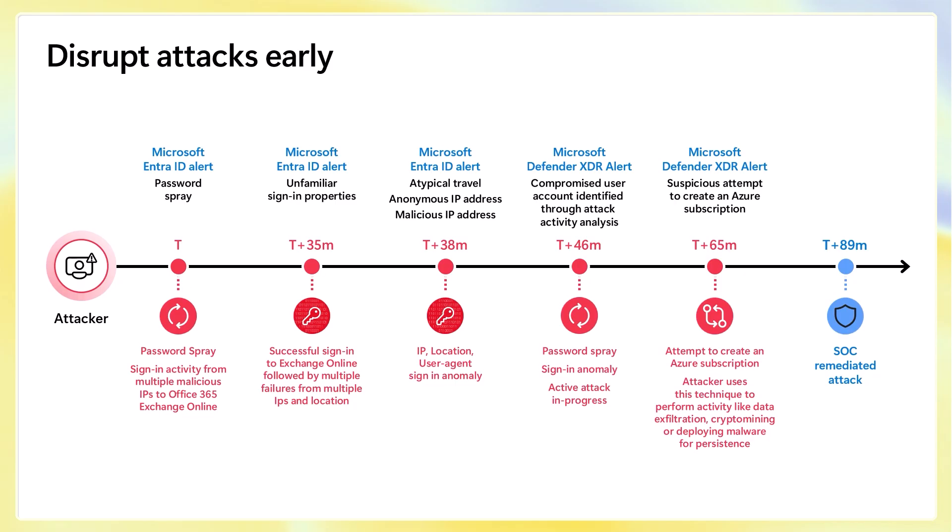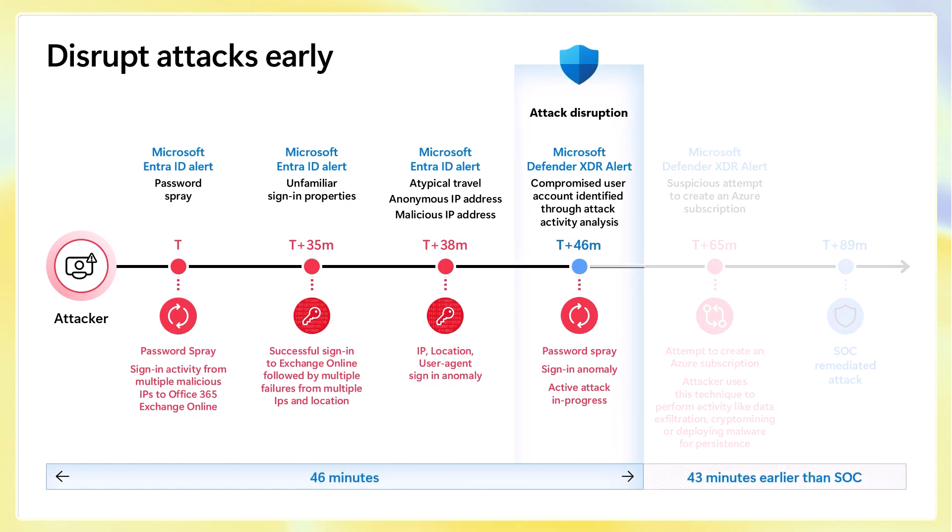We then see a suspicious attempt to create an Azure subscription. At this point, we're already an hour plus into this, and then it takes another 20 to 30 minutes for the SOC team to actually respond — looking at about 89 minutes total to remediate this attack. With automatic attack disruption, we're able to pull that timeline back significantly. When Defender XDR identified this alert occurring, we were able to step in and disable that user account at minute 46 instead of at minute 89.